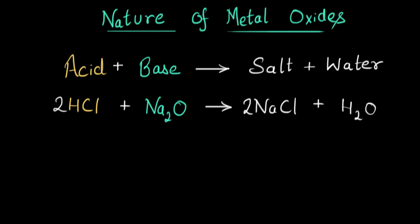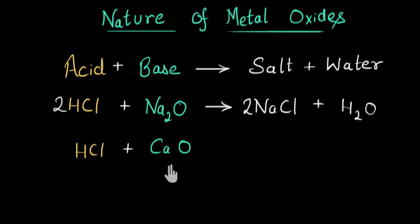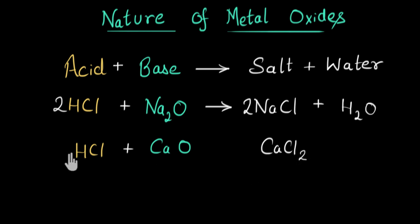Let's take one more example just to confirm things. This time I'm going to take calcium oxide — calcium is also a metal, so this is a metal oxide — and react this with the acid HCl. Here also a double displacement reaction will happen. Calcium will get attracted to chlorine and we will get calcium chloride, CaCl₂, and hydrogen will get attracted to oxygen and we will get H₂O.